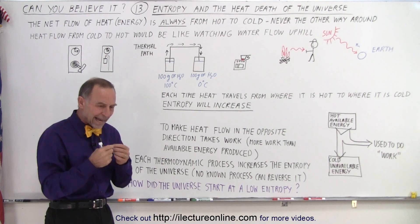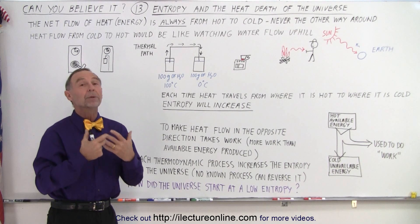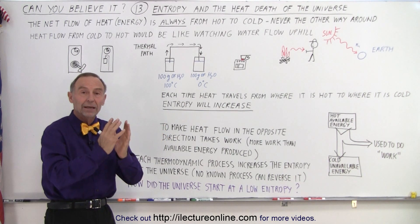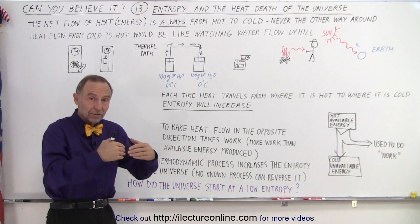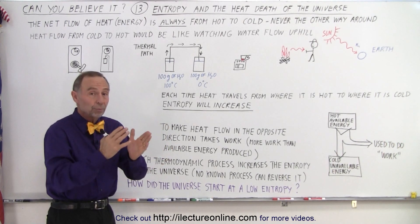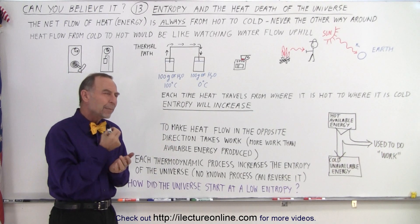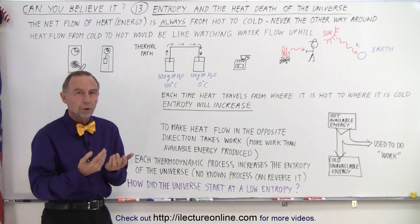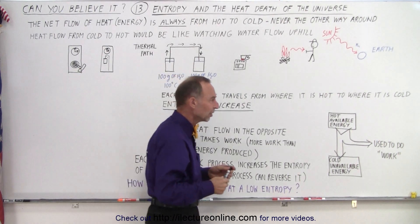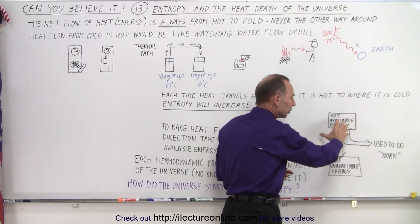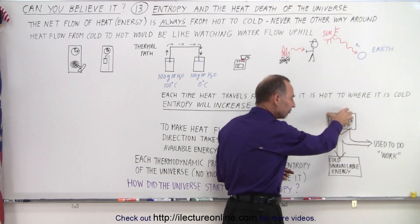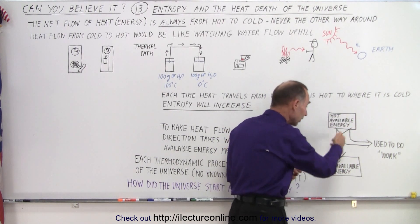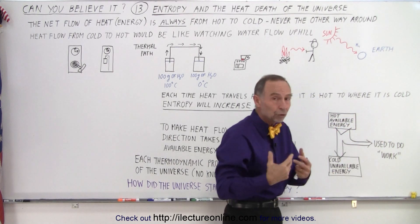Entropy is a measure of available energy. If you compress a spring, that puts potential energy in it — there's now available energy, and that compressed spring could do work. In the same context, available heat can do work. Here's a schematic of the process: if you have hot available energy, it can flow to a cold place where the energy is no longer available, but during that process you can siphon off some of that heat and actually do work with it.